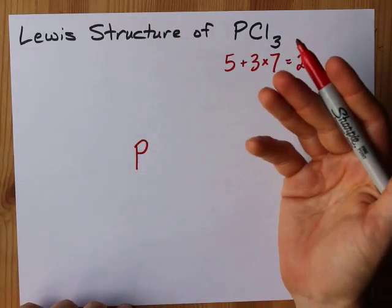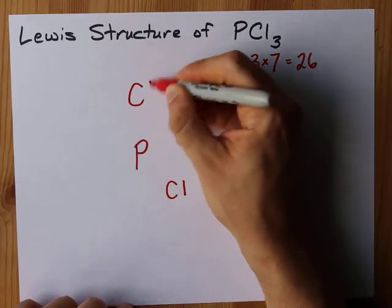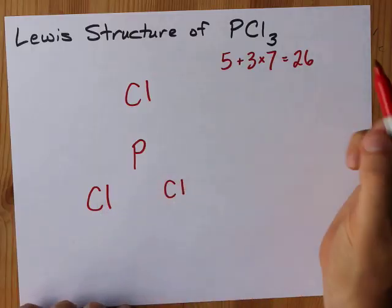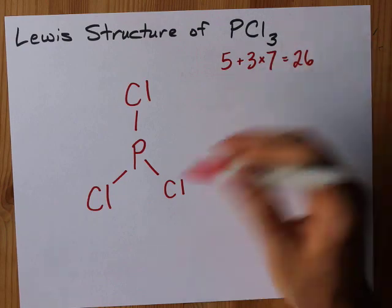Chlorine is often happy with a single bond, so that would never hold a candle to phosphorus. I'm going to put the P in the center and 3 Cls around it. I like bonding those with single bonds to hold them together in a molecule. That's my base structure here.